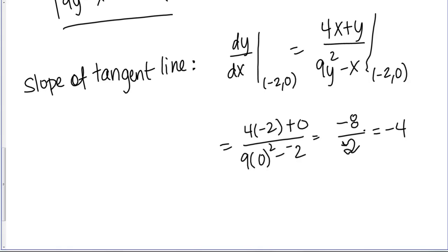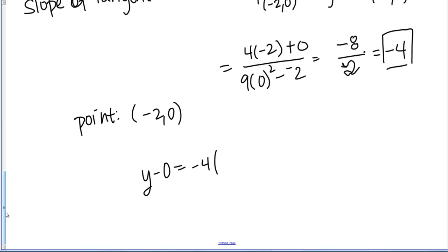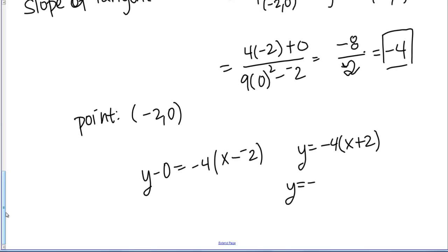Now we have everything we need to write the equation of the tangent line. We're given the point negative 2, 0, and we have the slope negative 4, so we can use point-slope form. That gives y minus 0 equals negative 4 times (x minus negative 2), which simplifies to y equals negative 4 times (x plus 2). Distributing the negative 4, the equation of the tangent line is y equals negative 4x minus 8.